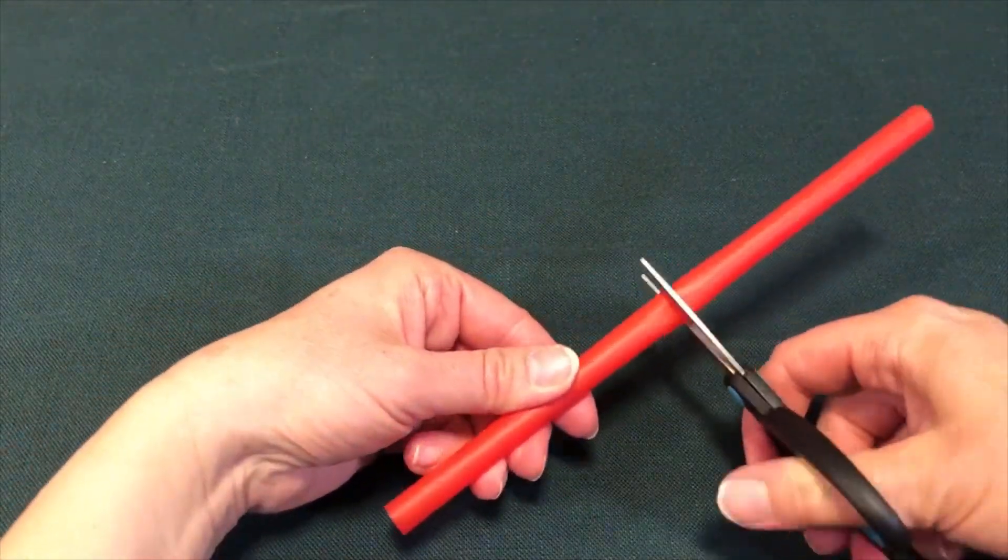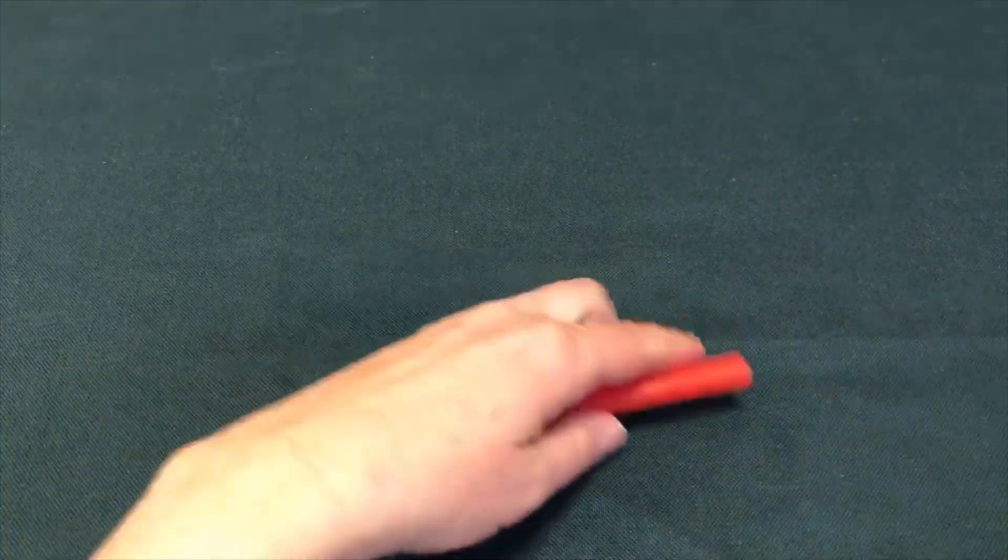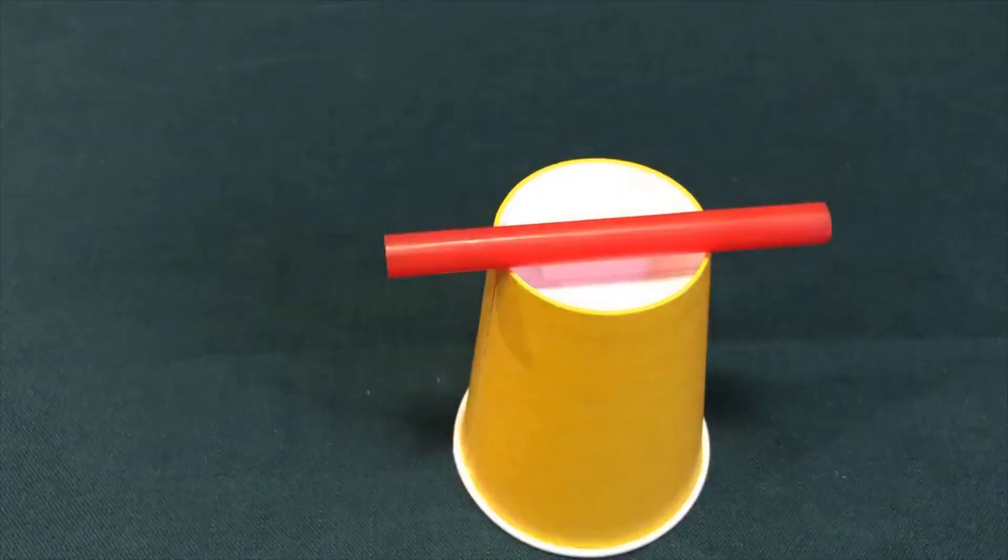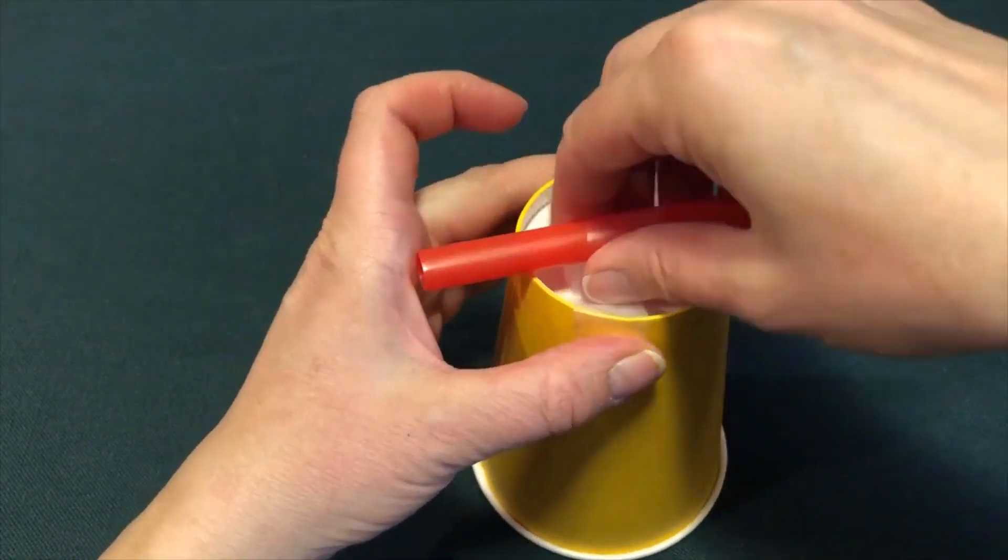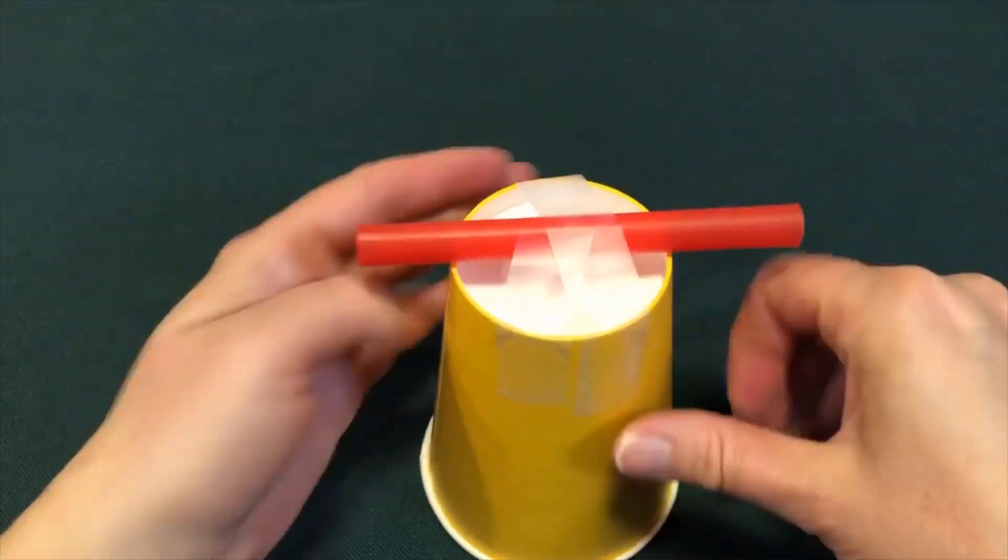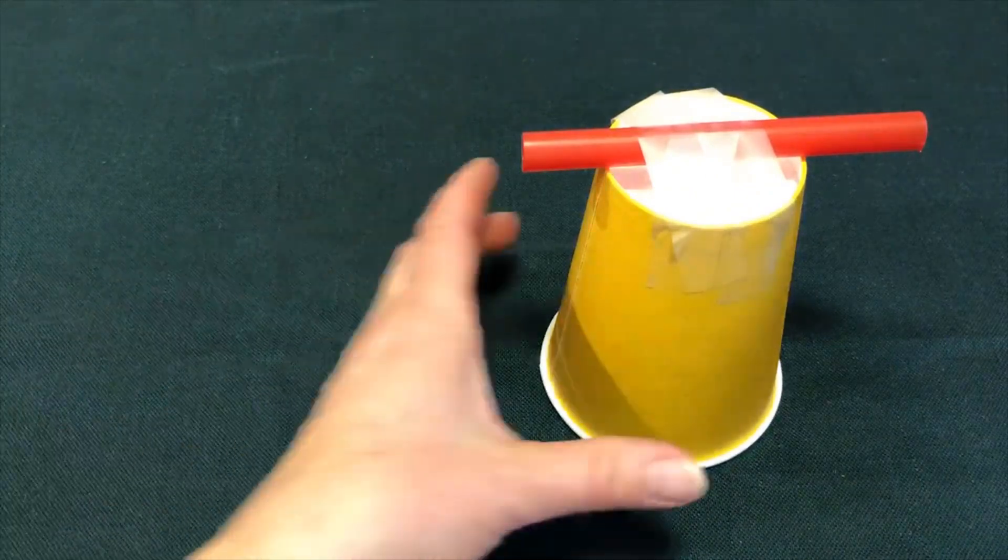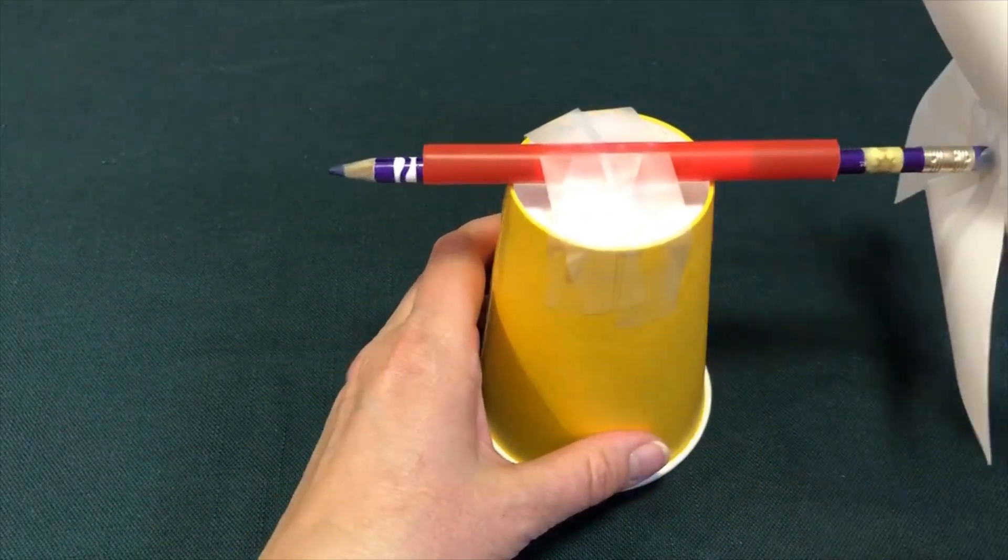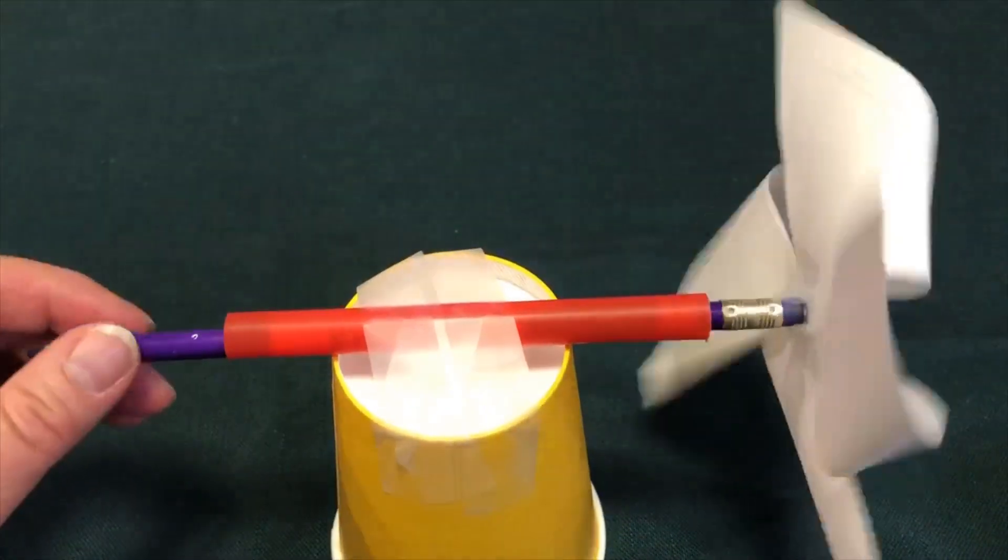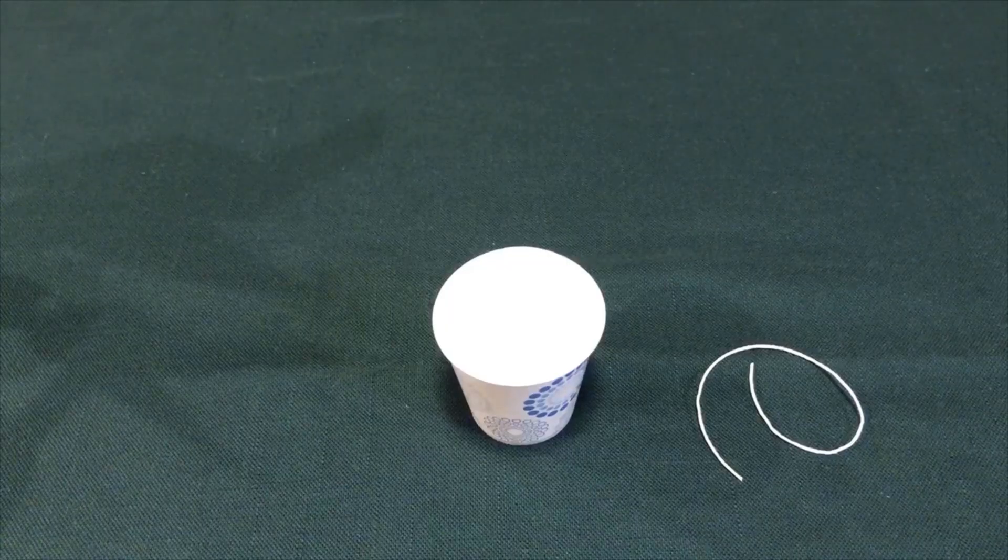Now cut the straw in half, and then take the tall cup, turn it upside down, and tape the cut straw to the cup bottom, like this. Now insert the pencil into the straw. The straw is going to hold the pencil and allow it to spin.